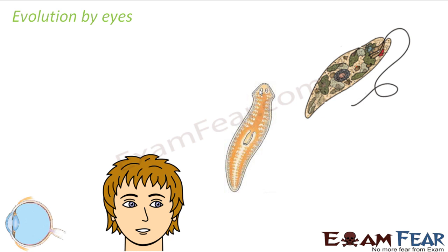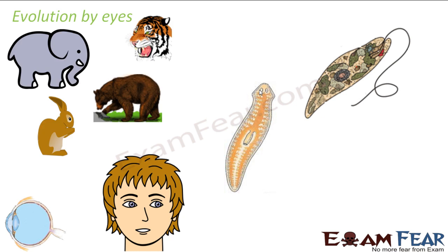Then gradually, even more developed eyes came into being — the most developed eyes of human beings. Now we have such a complex eye structure which has got a lens, retina, and everything in place, so we can view objects far and near. How did this evolution take place? Did this happen overnight? No — it took a lot of time. This was a gradual and continuous process, and over a period of time, the structure called eye came into picture. So all vertebrates and mammals have a similar basic structure of eye with small differences here and there.